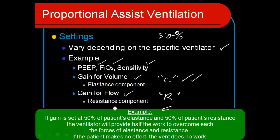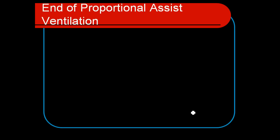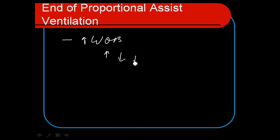As noted, if the gain is set to 50% of elastance and 50% of resistance, the ventilator will provide half the work to overcome each of those forces — so the patient and the ventilator are doing 50-50. Of course, if the patient does nothing, the ventilator won't do anything. The ventilator is going to try to do half the work of each breath if set at 50%. There is often a maximum of around 80% of the patient's work of breathing that the ventilator can overcome. This mode is particularly useful for patients with an increased work of breathing where we're having a hard time deciding how much work we want them to do. With proportional assist ventilation, we can decide to increase support and then slowly decrease it over a period of time.